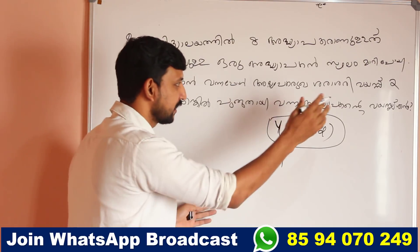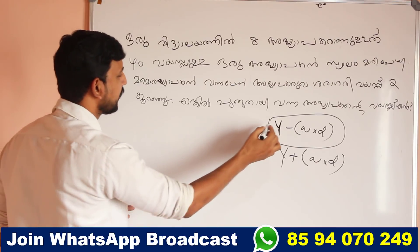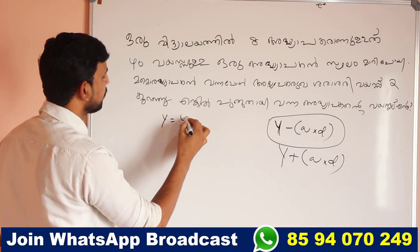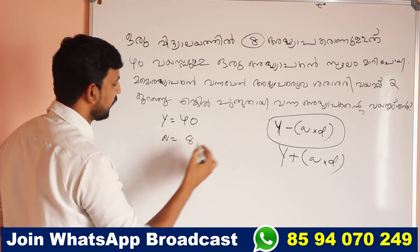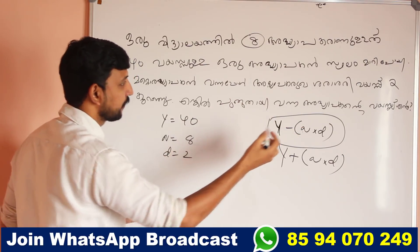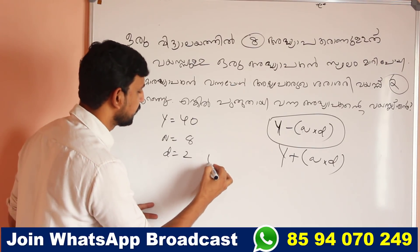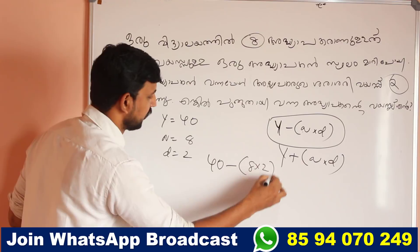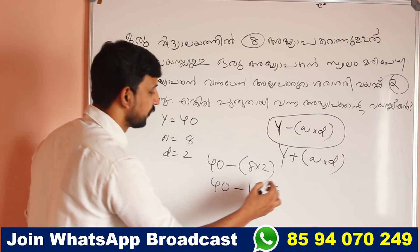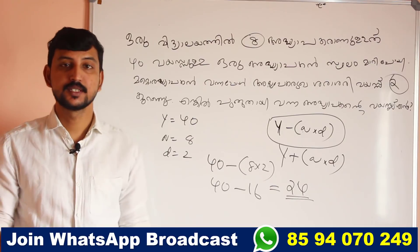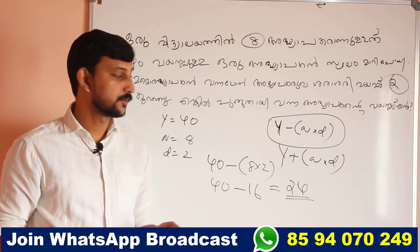We will add y plus n into d. Now, let's do this. What is y? Y is 40. That's why n is equal to the same angle. D is 2, so dn is equal to 2. Now, 40 minus 8 into 8, 40 minus 8 into 14. Now, 40 is equal to 24.